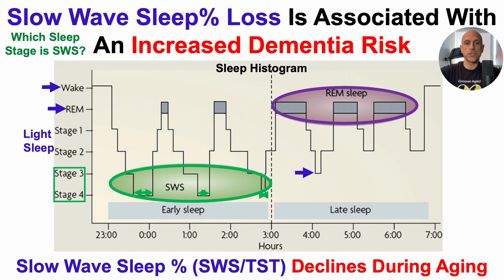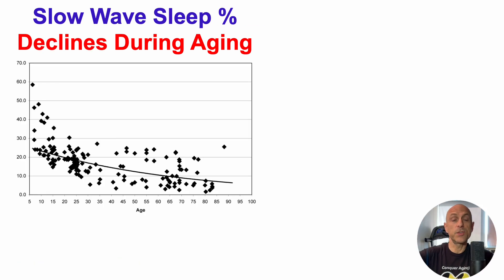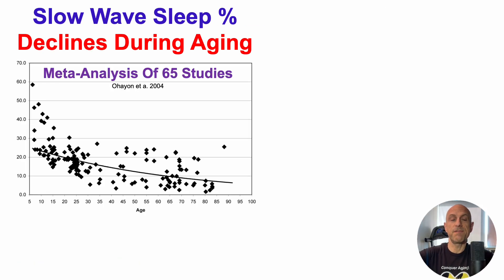The majority of the time that was spent in slow wave sleep is now spent in REM sleep. Note that slow wave sleep percentage — defined as slow wave sleep divided by total sleep time — declines during aging. This is shown in a meta-analysis of 65 studies.